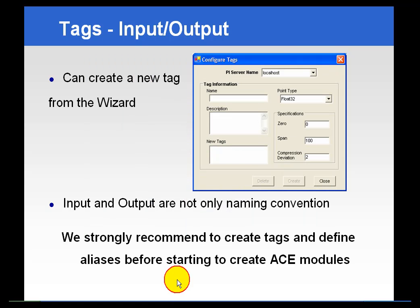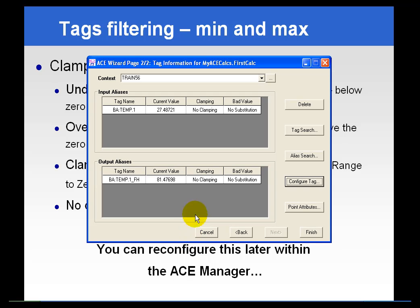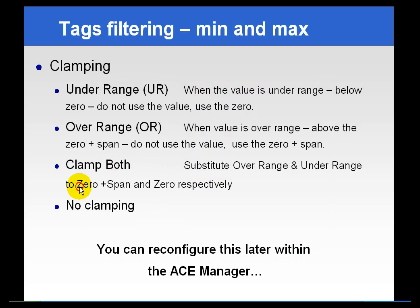The next thing to talk about is filtering. Going back to the ACE Wizard dialog box, the first filter is called clamping, and the selections are: no clamping, under range clamping, over range clamping, or both. Under range means that if we get a value that is below the zero value for the tag, we will not use that value — we will use the zero value instead. Conversely, with over range clamping, when the value is over the range of the tag — that's the zero plus the span value — do not use the collected value, but use the zero plus span as an upper limit.